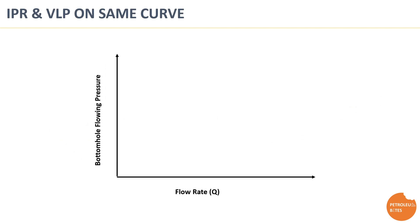The key to well performance lies in the intersection of the IPR and VLP curves. The IPR shows us how much fluid reservoir can deliver, while VLP tells us the pressure required to lift that fluid to the surface. Understanding and optimizing both curves is essential for maximizing well productivity. At the point where the IPR and VLP curves intersect, we have the actual flow rate of the well. If the VLP curve doesn't intersect with the IPR curve, it means the well cannot produce due to lifting constraint.